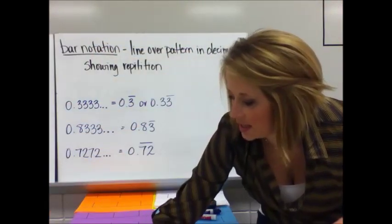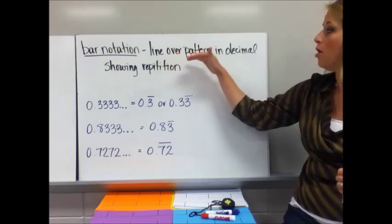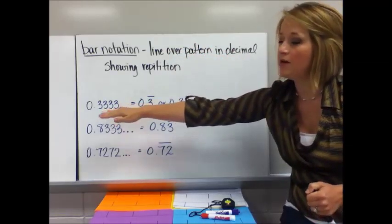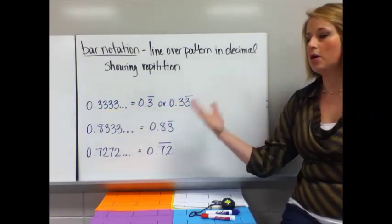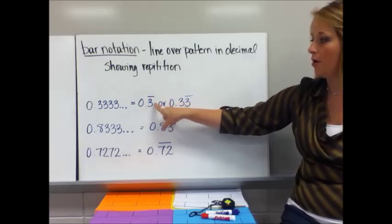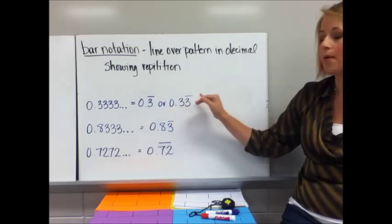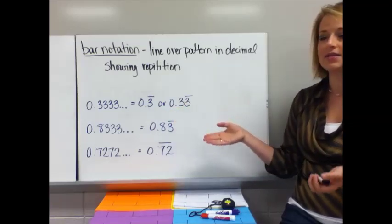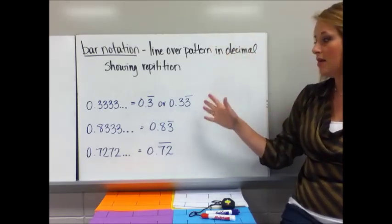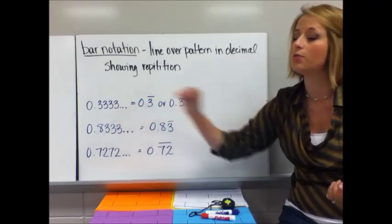To help with those repeating decimals, we use something called bar notation. It is a line that goes over the pattern in the decimal showing the repetition. So here's the one we had: 0.3333... that would have gone on and on. So I put a bar over the part that is repeating, which is the three. Sometimes you'll see it written as 0.33 with a bar over the last one, because somebody was dividing and noticed it starting to repeat. That's fine, because if you repeat just what's under the bar, it looks the same as the original number.